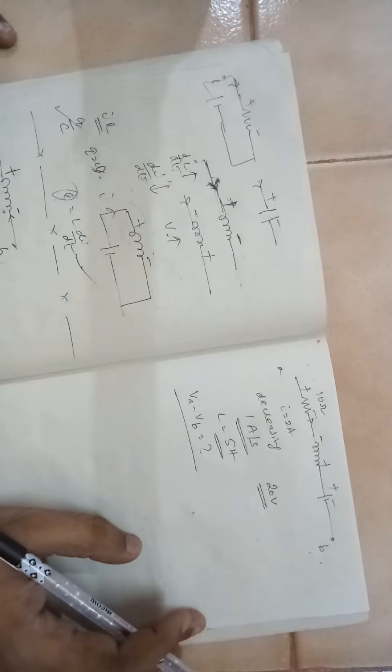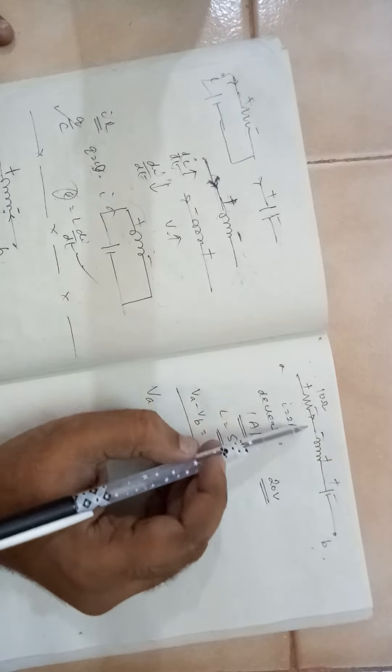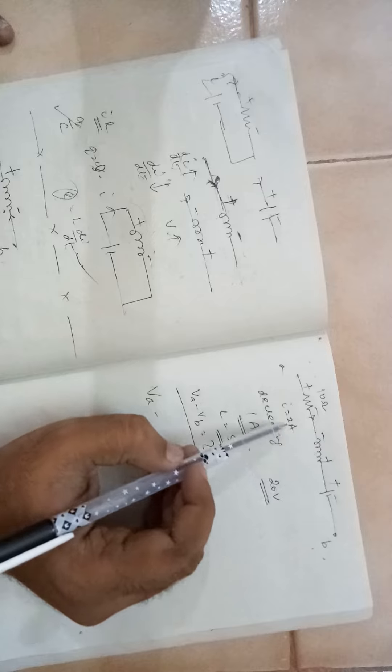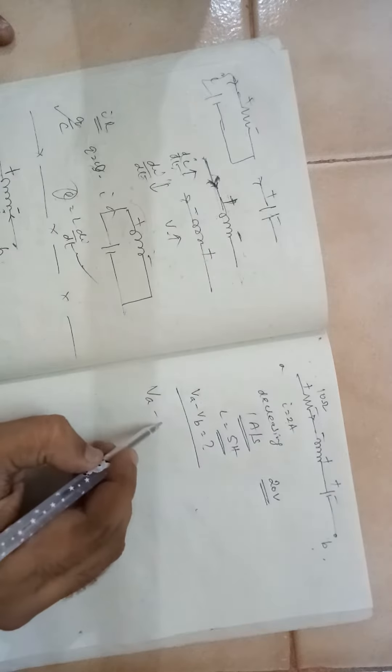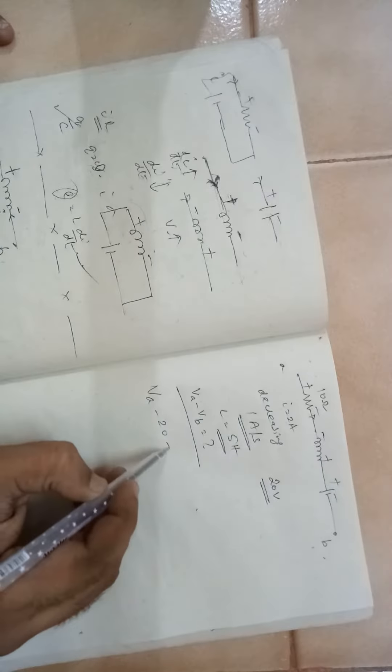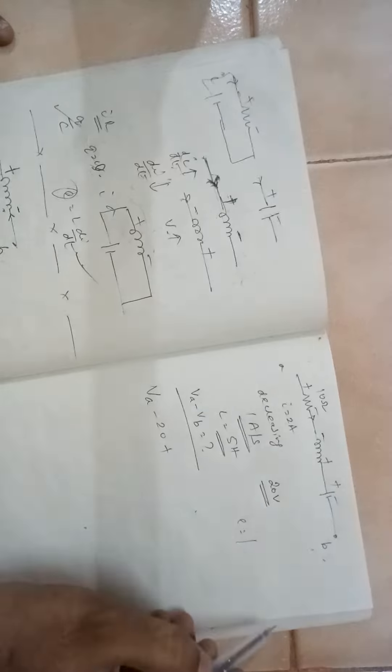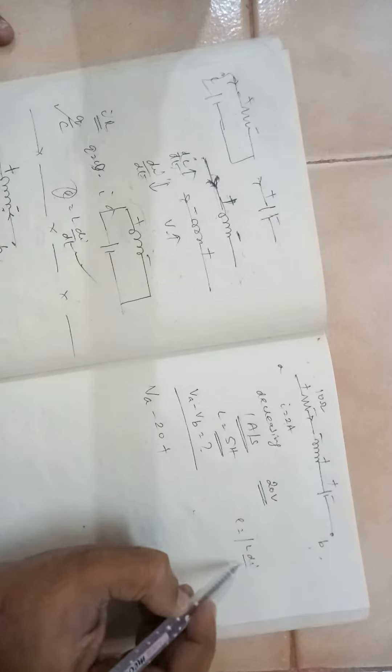Now apply Kirchhoff's rule. VA minus crossing a resistor IR. I is 2 and this is 10, so 20. There is a rise minus to plus, so plus. Here we are interested only in the magnitude, so it is L di by dt.